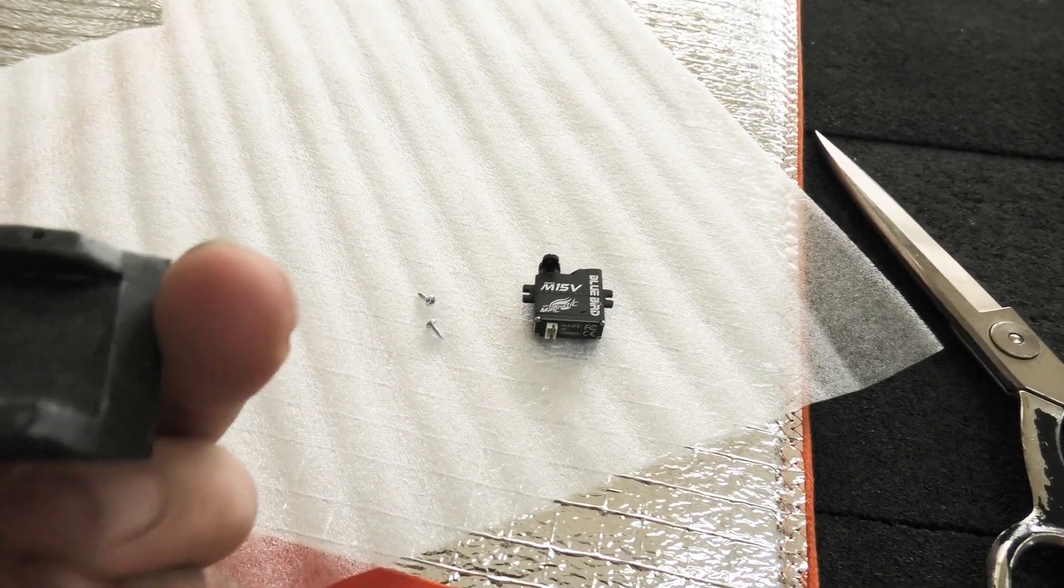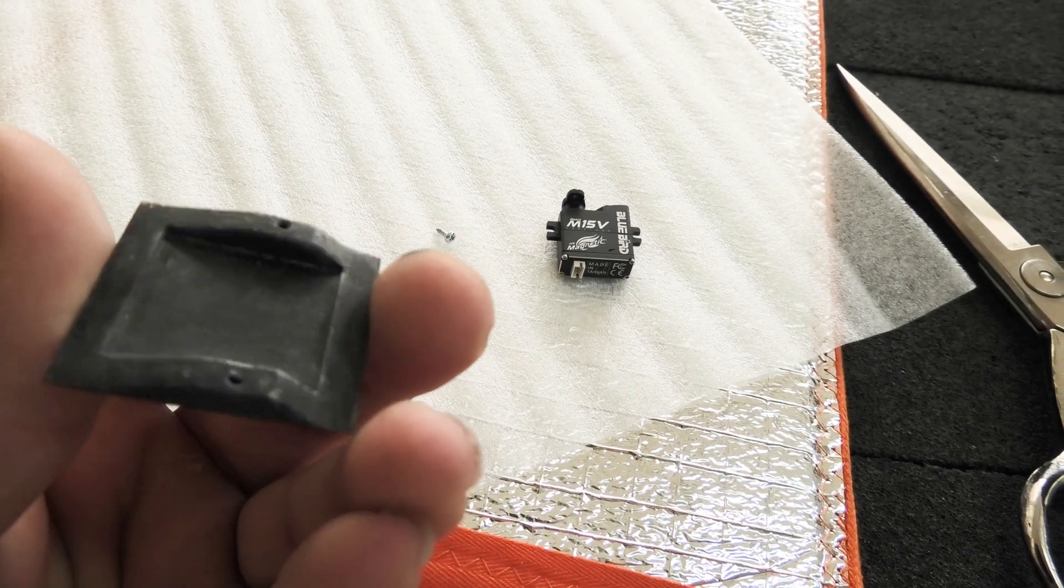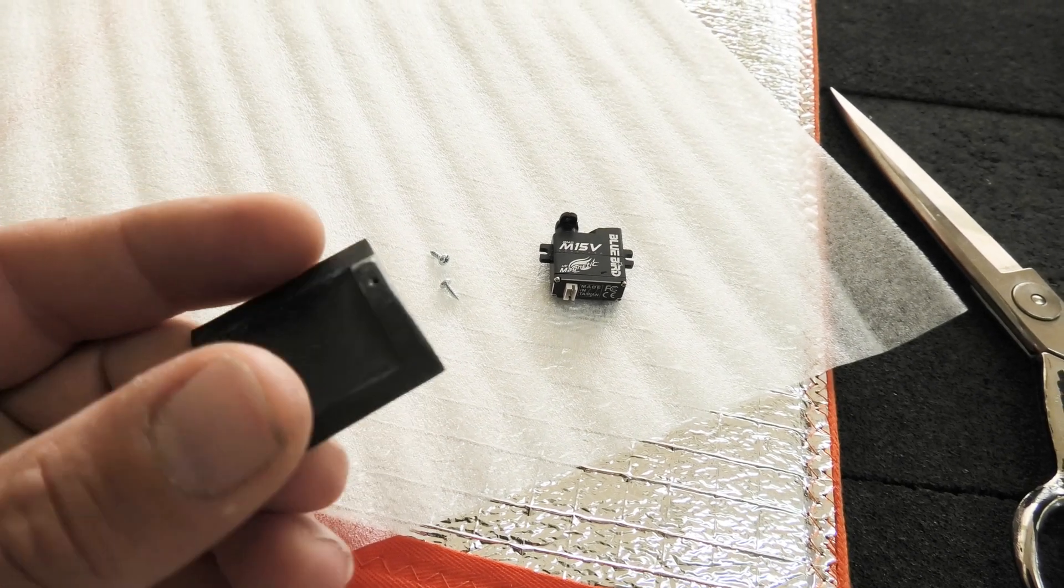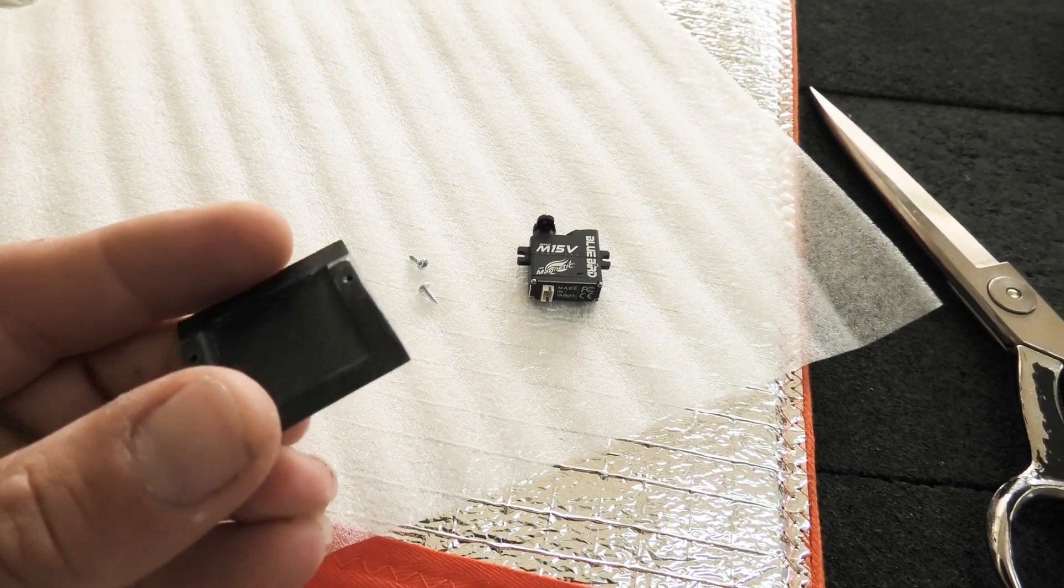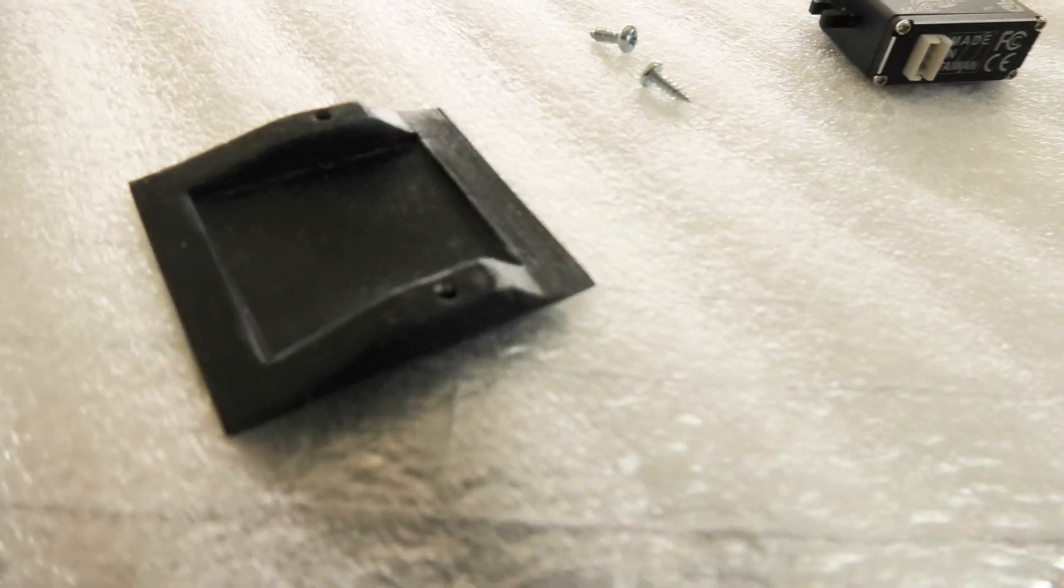Alright, we've cleaned up the servo trays. So I scrubbed off all the PVA mold release with some water and a little brush. And everything's looking really good. And I actually drilled the holes there.